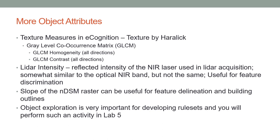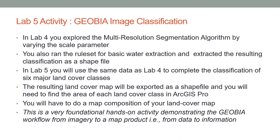Another useful metric — which you can experiment with — is the slope of the NDSM raster, which can be very useful for feature delineation and building outlines. Object exploration is a very important precursor activity for developing rule sets, and you will perform such an activity in Lab 5. In Lab 5, you are going to perform a complete GEOBIA image classification starting from the data and ending up with a land cover classification map product.